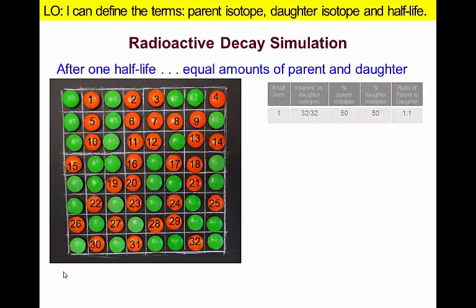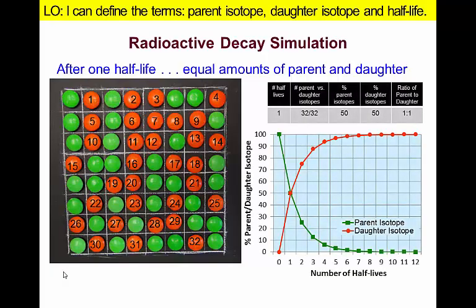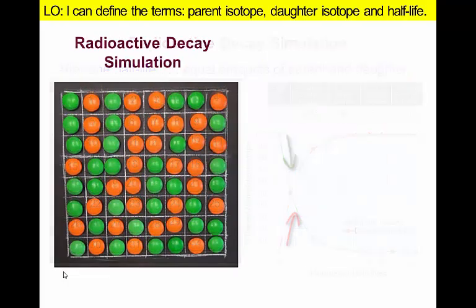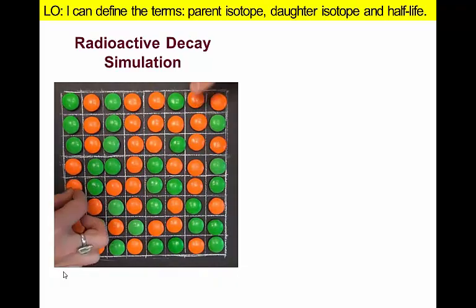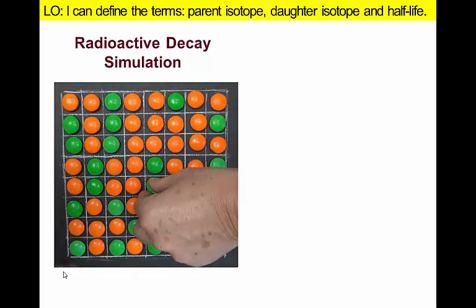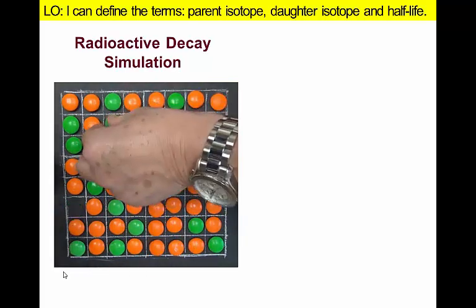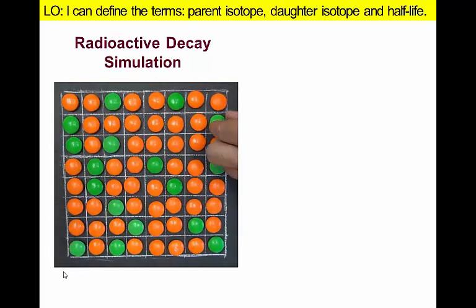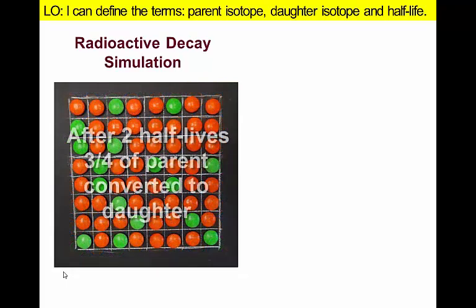Another way to represent this information is using a graph. When the rock formed, it only had parent isotopes. As time passes, the amount of parent isotope decreases and the amount of daughter increases. During a second half-life, the number of remaining parent isotopes is again divided in half — now only a quarter of the original parent isotopes remain.